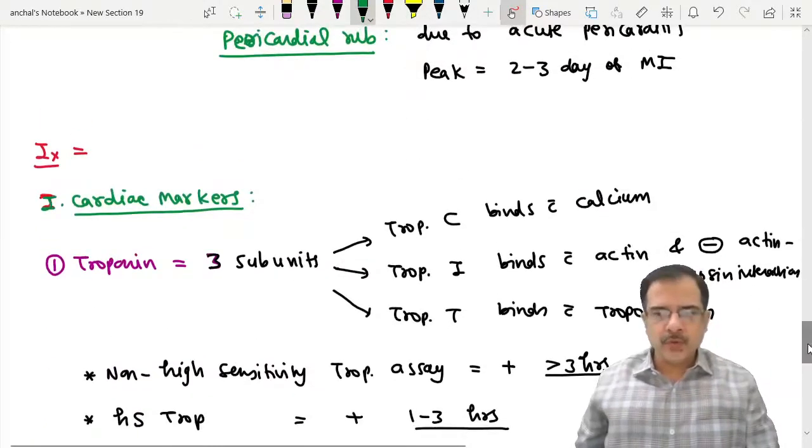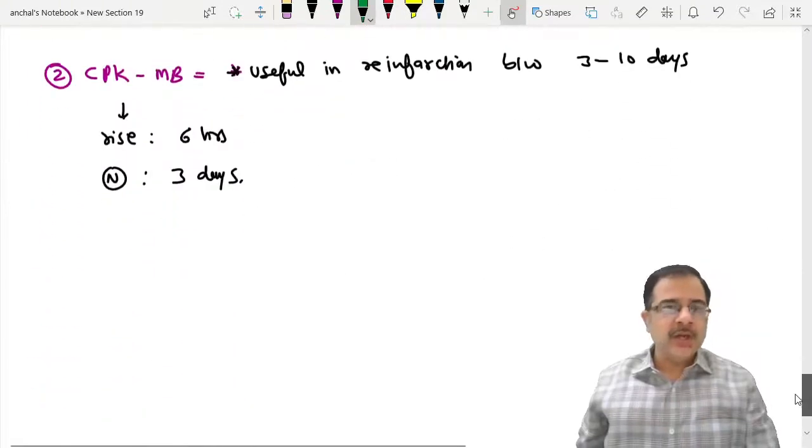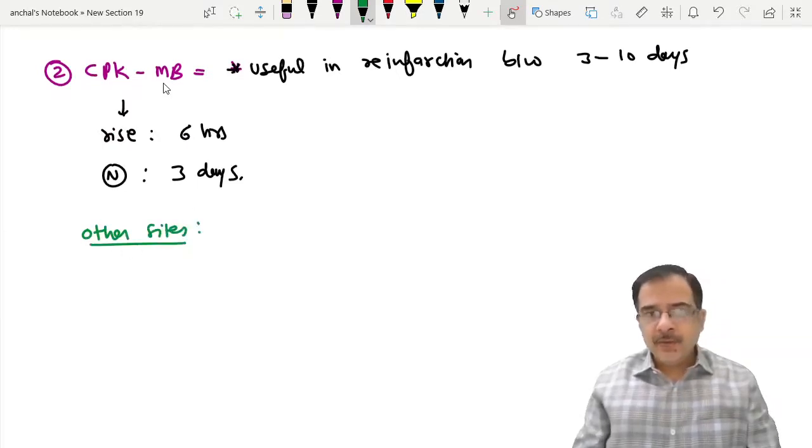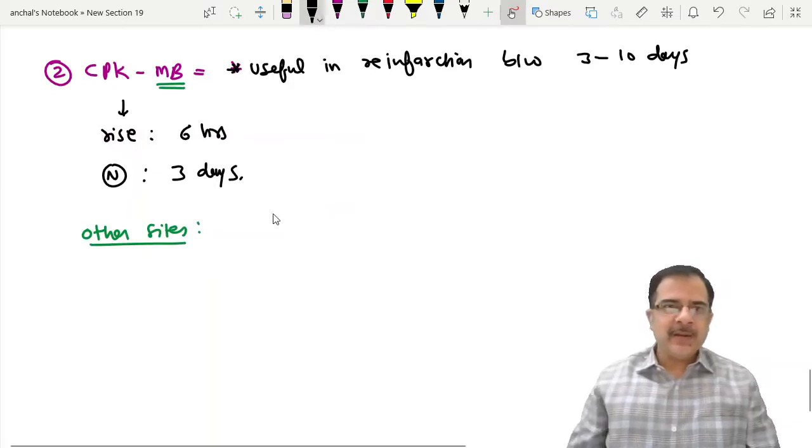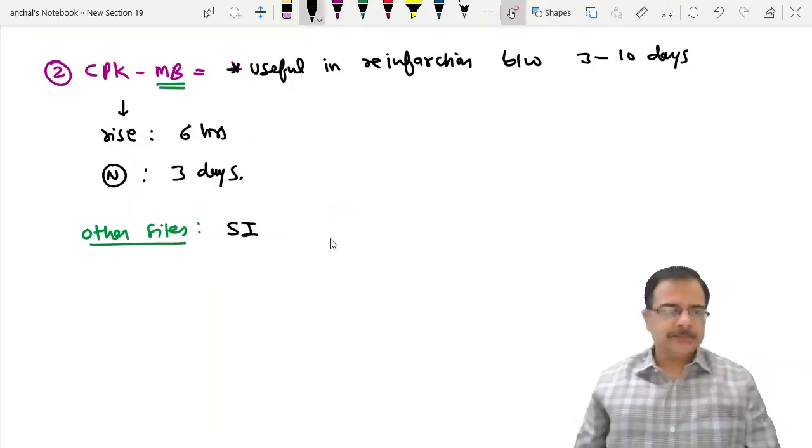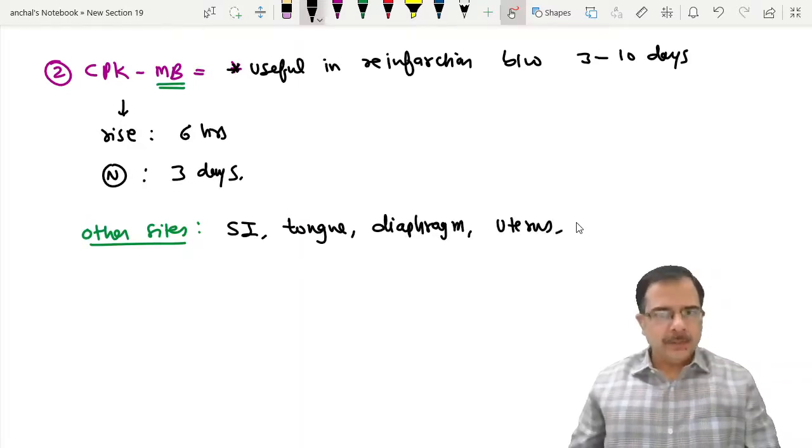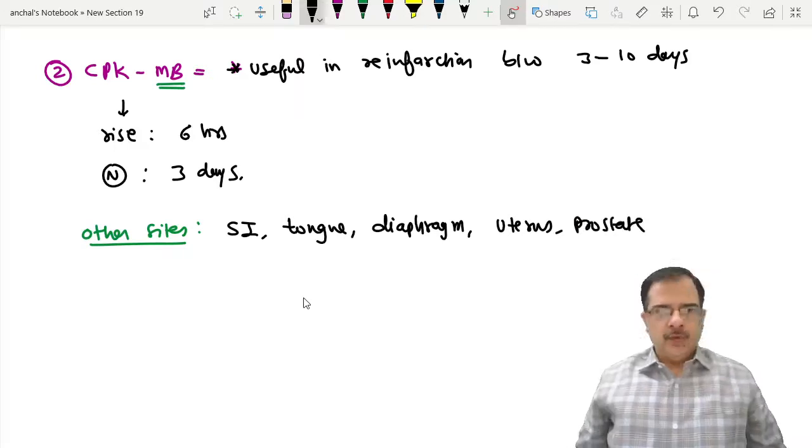CPK-MB fraction can be present in small intestine, tongue, diaphragm, uterus, and prostate.